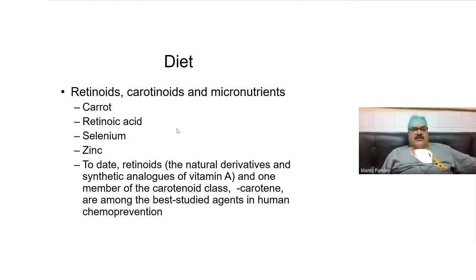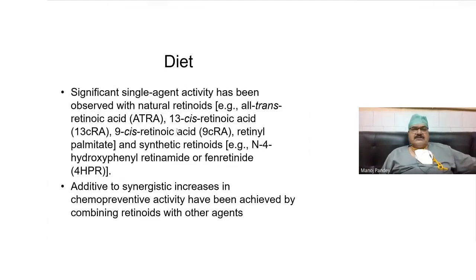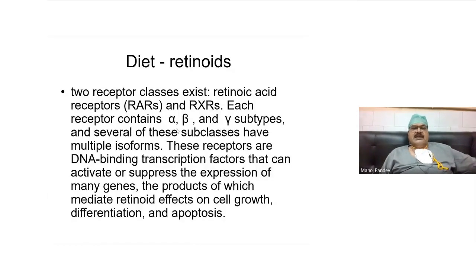Retinoids, carotenoids, and other micronutrients have been used in chemoprevention activities, but none have been found to be very effective in chemoprevention. The most commonly used retinoid was ATRA; 13-cis retinoic acid and 9-cis retinoic acid have also been used and found to have chemopreventive activity when combined with other agents. Retinoids act through retinoic acid receptors (RARs) — alpha, beta, and gamma — which are DNA-binding transcription factors that can activate or suppress the expression of many genes, thereby controlling cell growth, differentiation, and apoptosis.